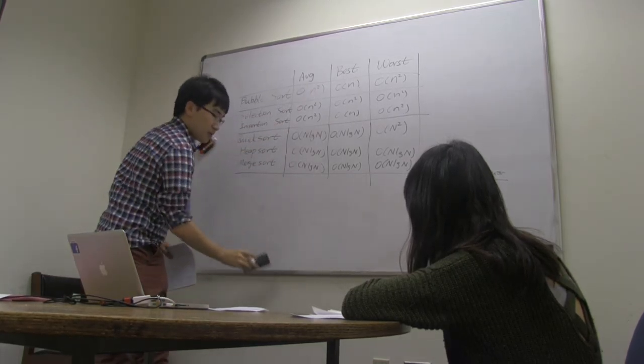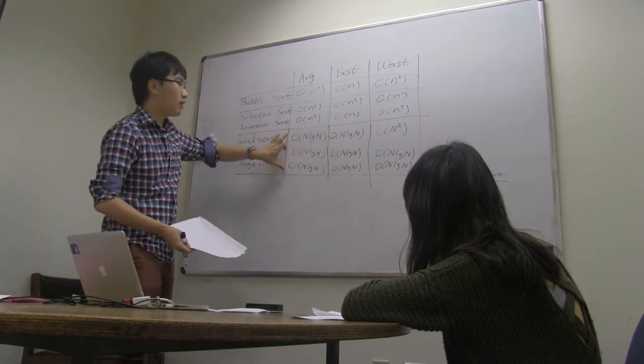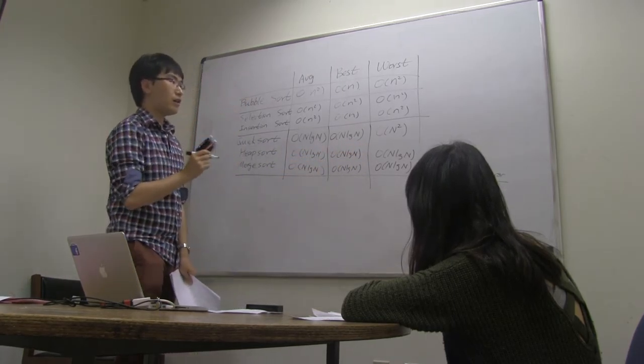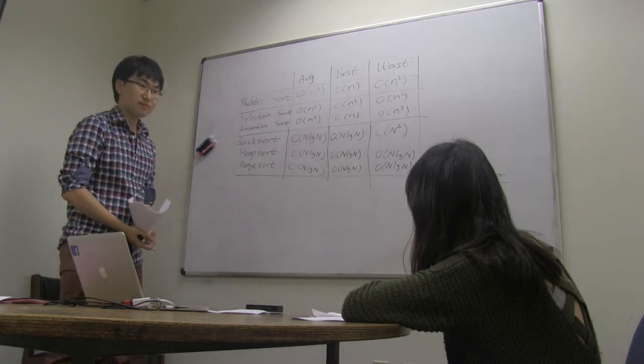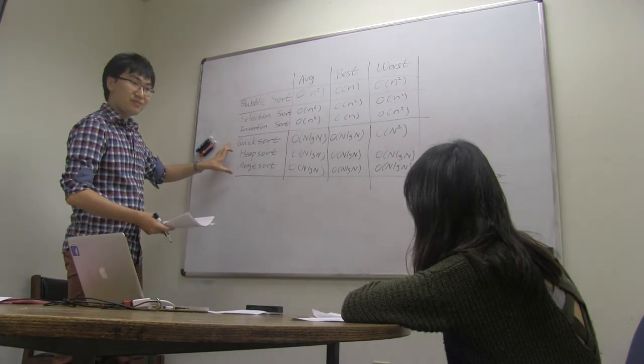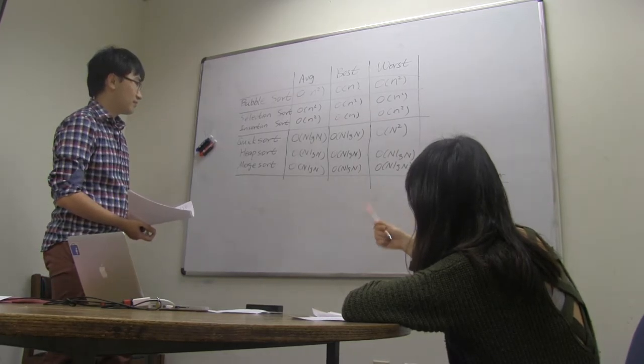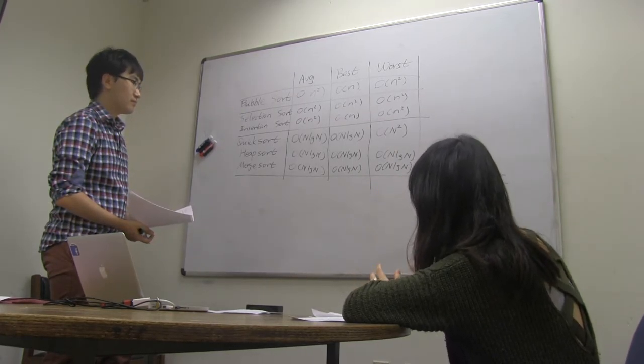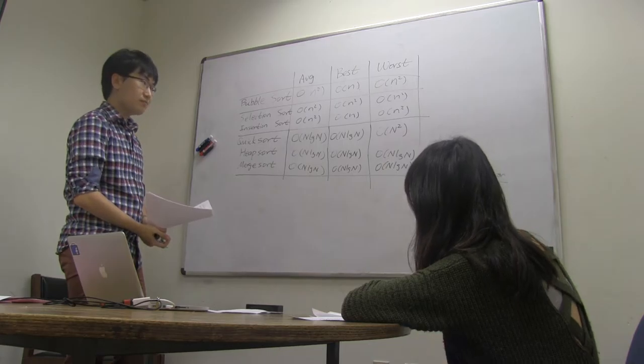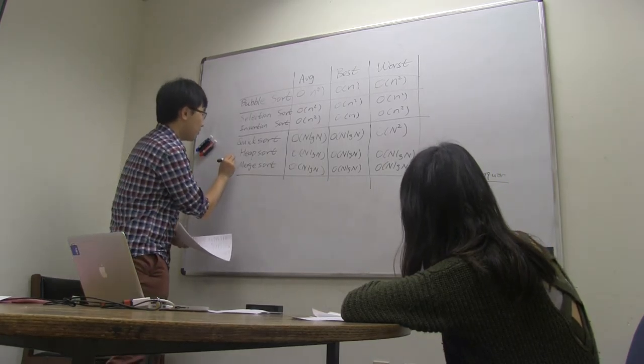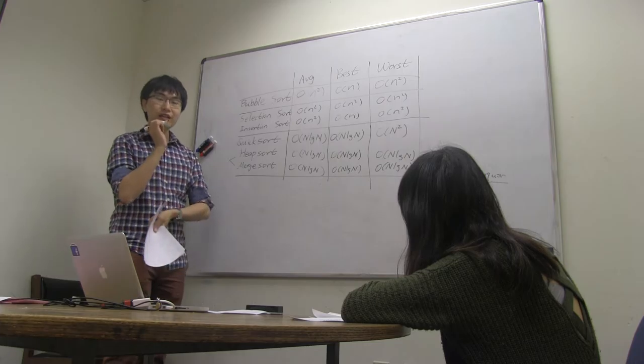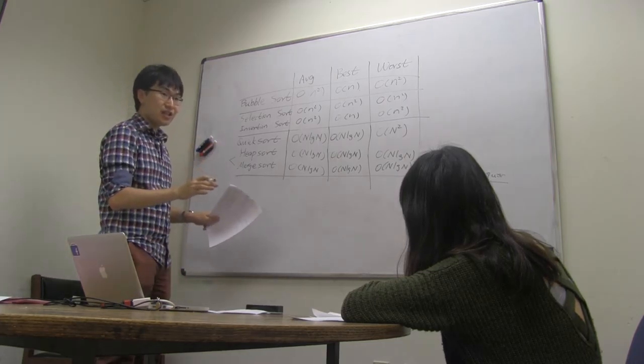However, in the worst case, only heap sort and merge sort can guarantee n log n performance in the worst case. So, which one is better, the heap sort or merge sort? You mean, which one is the best among them? Yeah, just the heap sort and merge sort, what's the advantage or the disadvantage of these two. Because they all have the same runtime here. Very good. So, if we are comparing these two algorithms, their performance are mostly similar with each other.